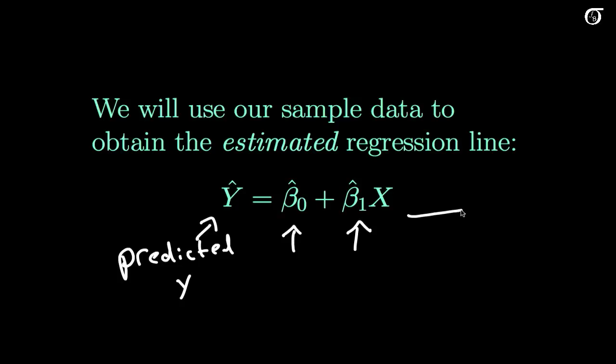And one thing to keep in mind here, I don't have an epsilon term over here, because my predicted value of Y is going to fall precisely on that line. My observed values of Y are going to vary about the line, but my predicted value of Y is going to fall right on that line.